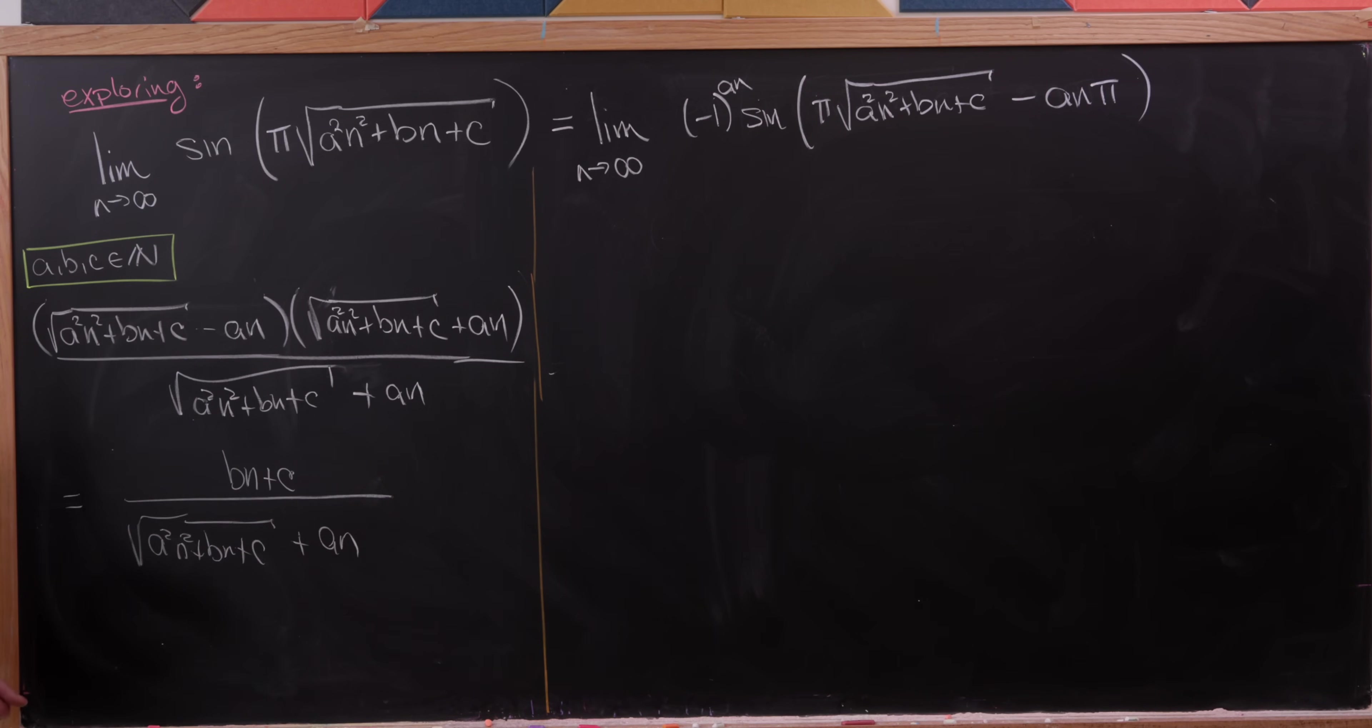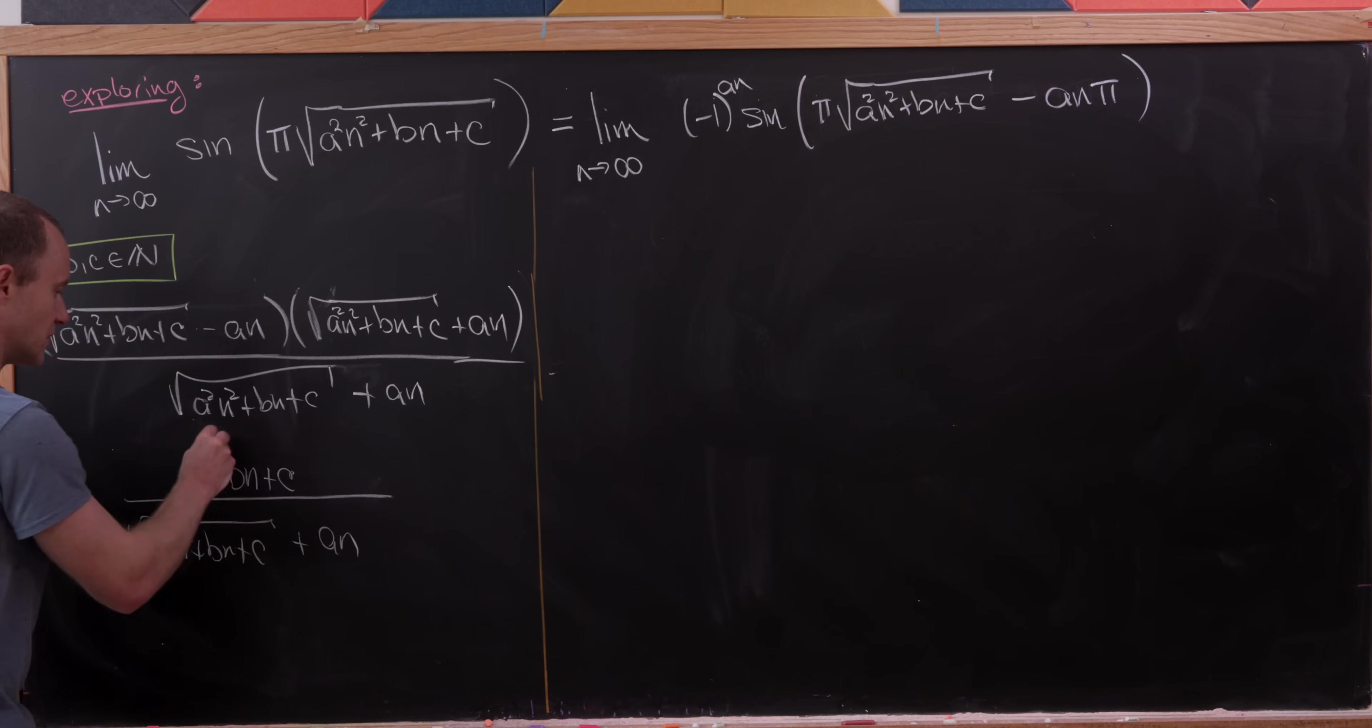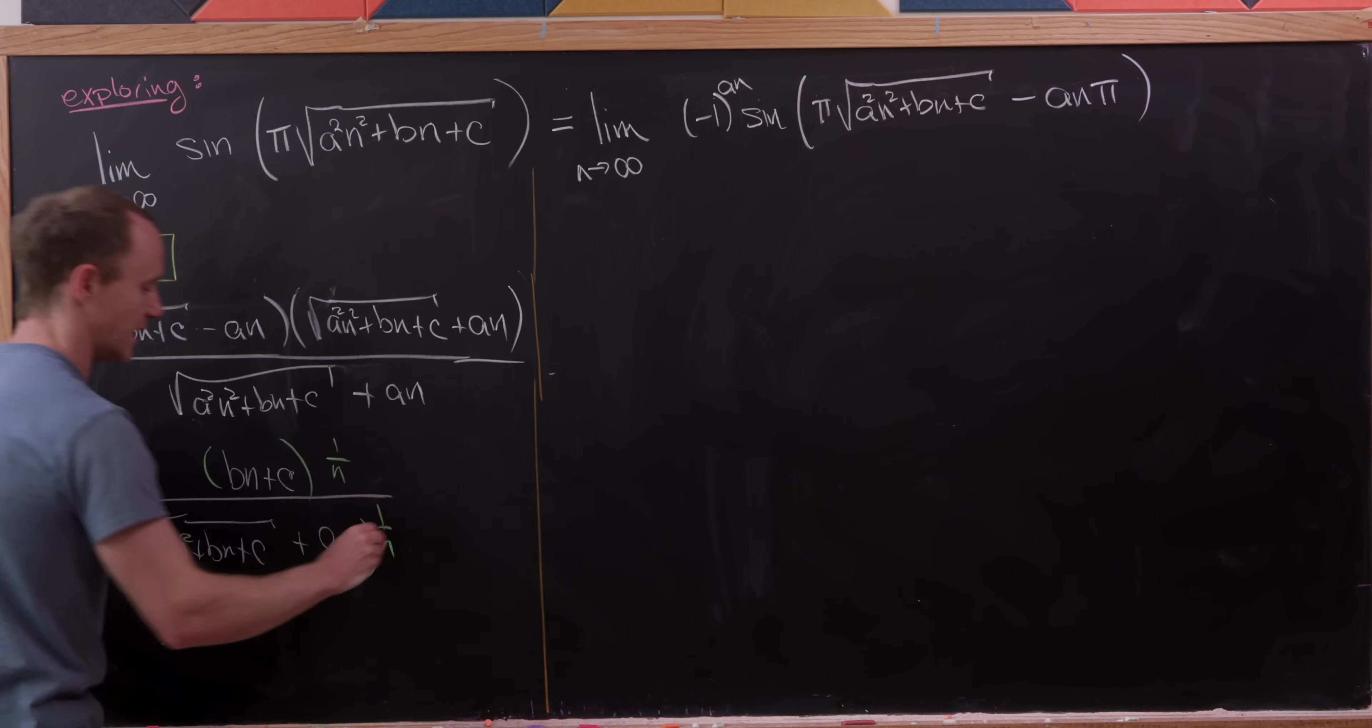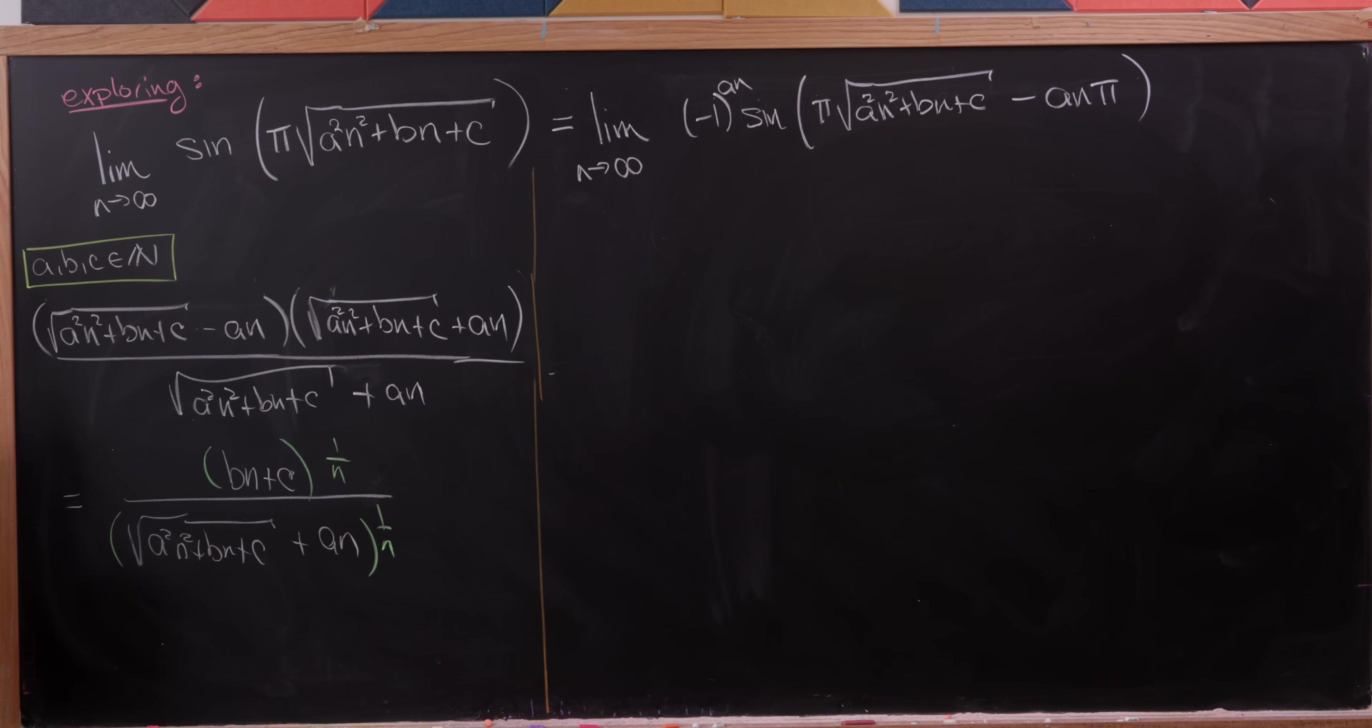And now before bringing that over, I'm going to do one more step: group the numerator and the denominator and multiply by one over n. That would be like the next step if we didn't have the sine there.